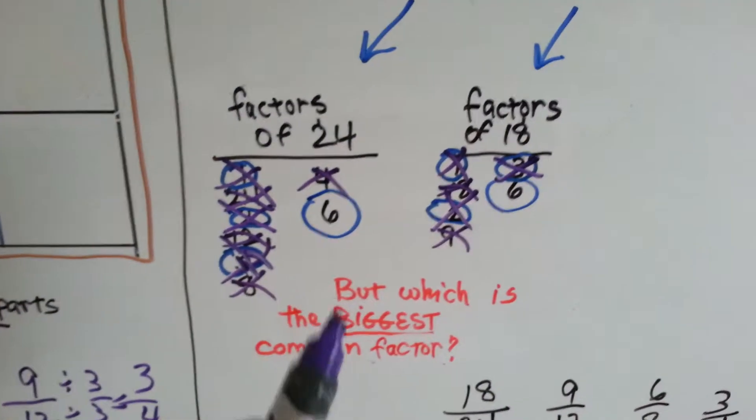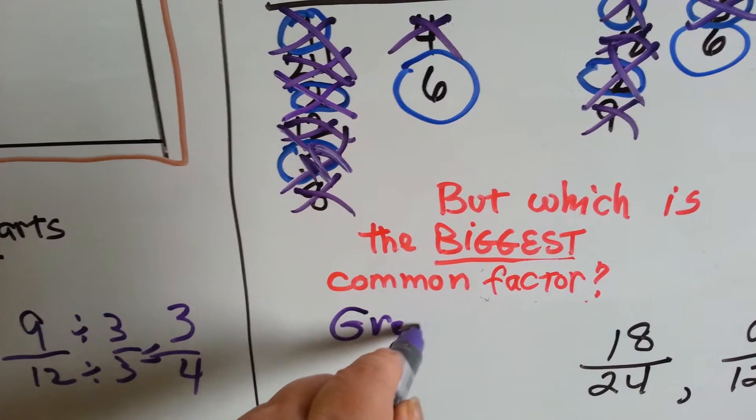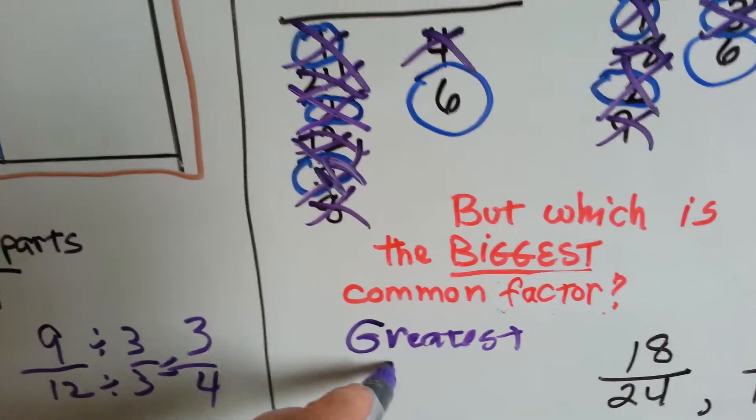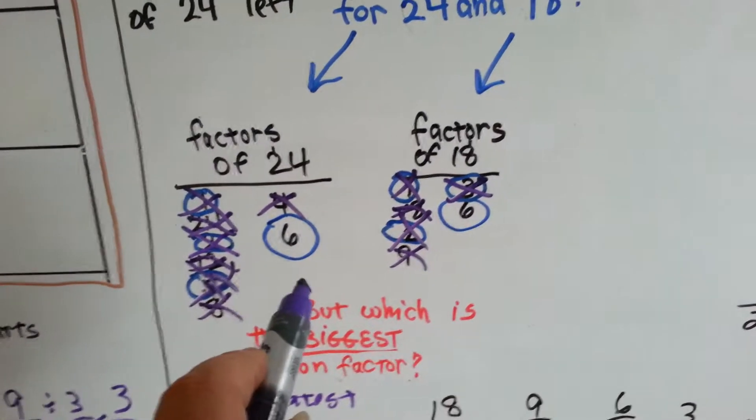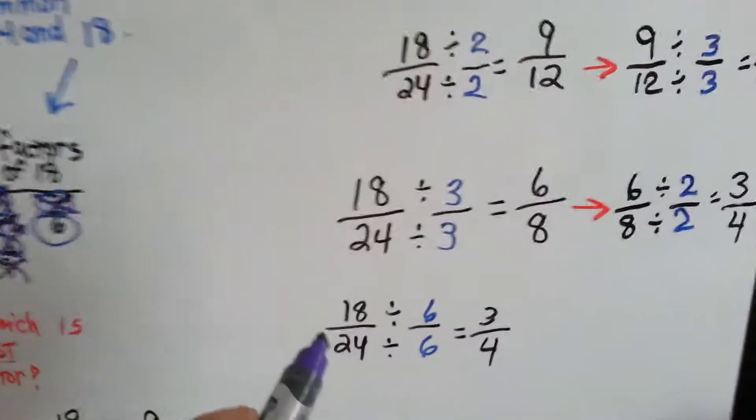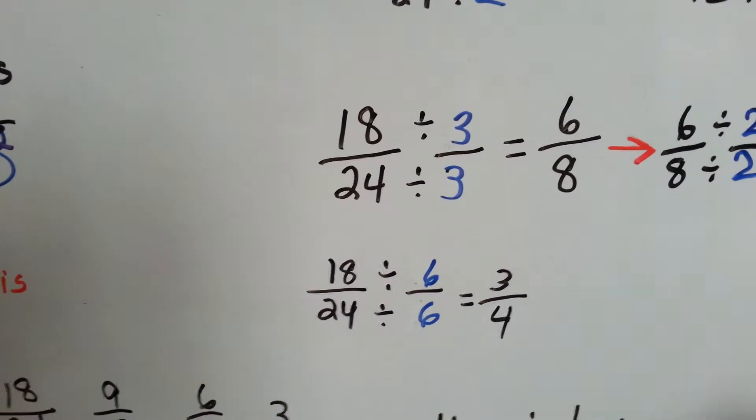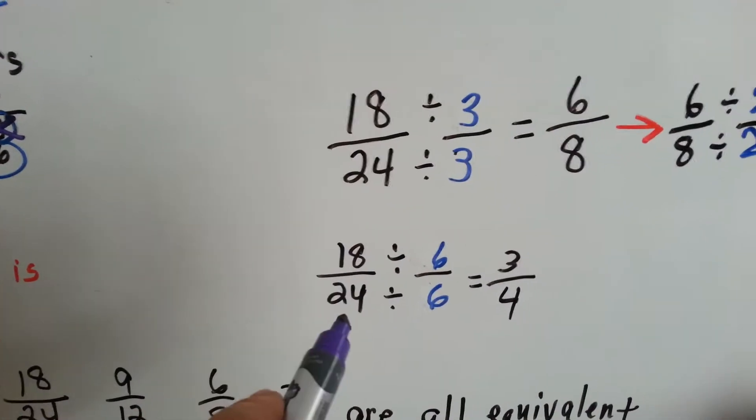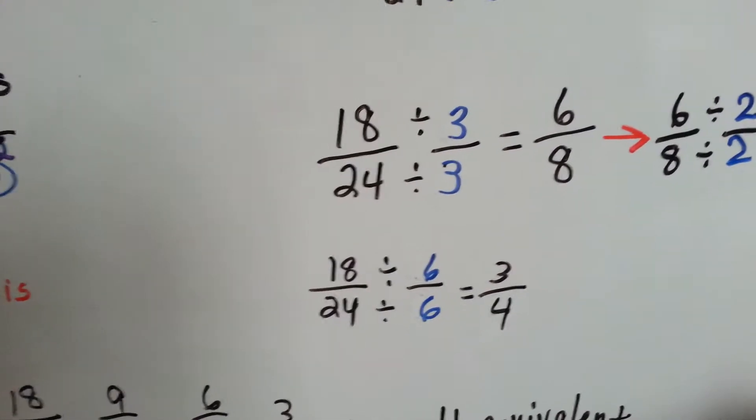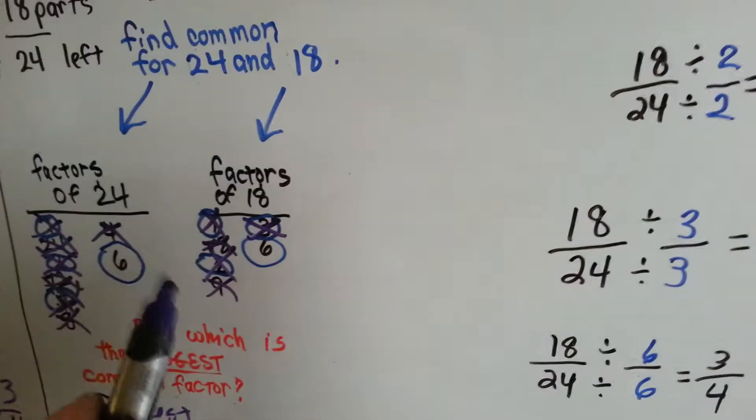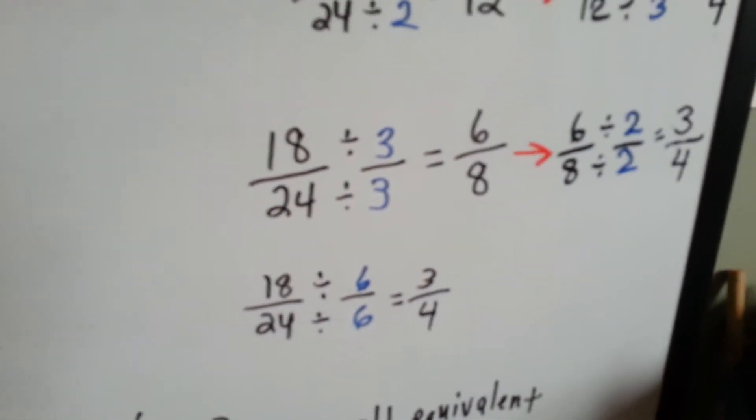The biggest common factor, the greatest common factor, is six. If we use six, we just do it once quickly, rip it off like a band-aid, it's done. Eighteen twenty-fourths. Eighteen divided by six is three. Twenty-four divided by six is four. We should have done the six in the first place. We should have gone with the biggest one in the first place. We would have had less work to do. So doing it the smaller way works, but you're going to have twice the amount of work, and everyone's going to be finished, and you're going to still be doing your work.